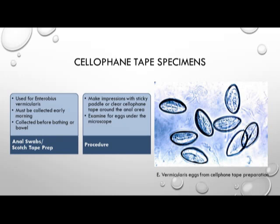What is commonly performed is the cellophane tape preparation, used for the detection of Enterobius vermicularis. The procedure must be done early in the morning before the patient bathes or has their first bowel movement. It includes making an impression with a sticky paddle or clear cellophane tape around the anal area, then examining microscopically for the presence of eggs. Here we have Enterobius vermicularis eggs detected using a cellophane tape preparation.